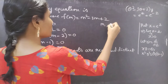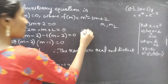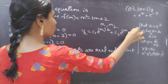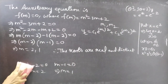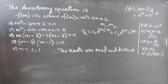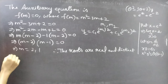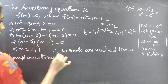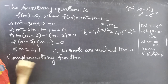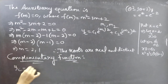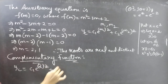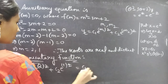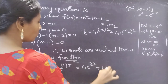We know that when two roots m1 and m2 are real and distinct, yc equals c1 e to the power m1·z plus c2 e to the power m2·z. Therefore, yc equals c1 e to the power 2z plus c2 e to the power z.